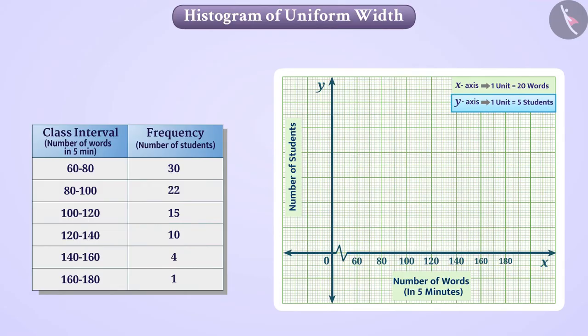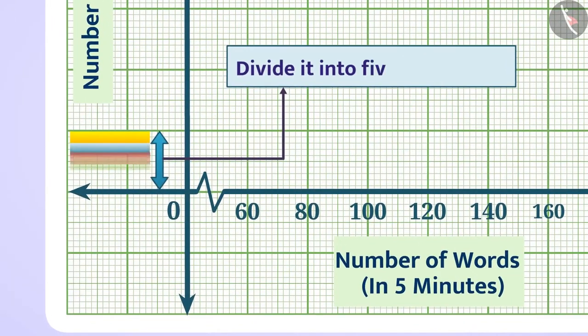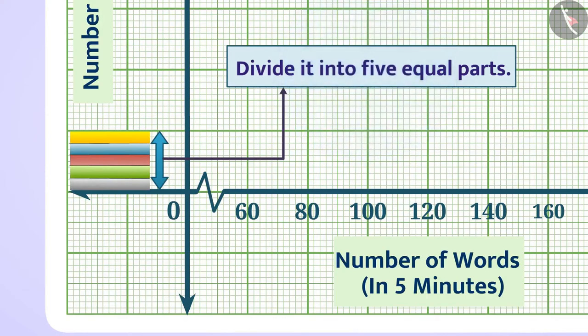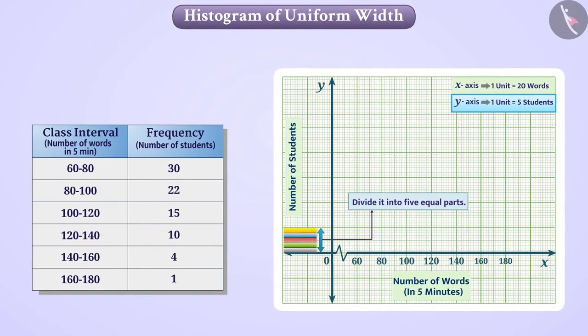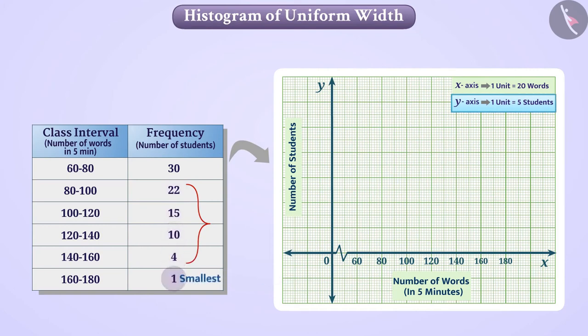Taking this scale and divide it into 5 equal parts of the unit, which will help us to represent numbers such as 1, 4 and 22. In this way, with the help of this scale, 1 unit is equal to 5 students, we will properly represent other numbers along with smallest and largest numbers. By choosing the scale, we will show the numbers on the y-axis.